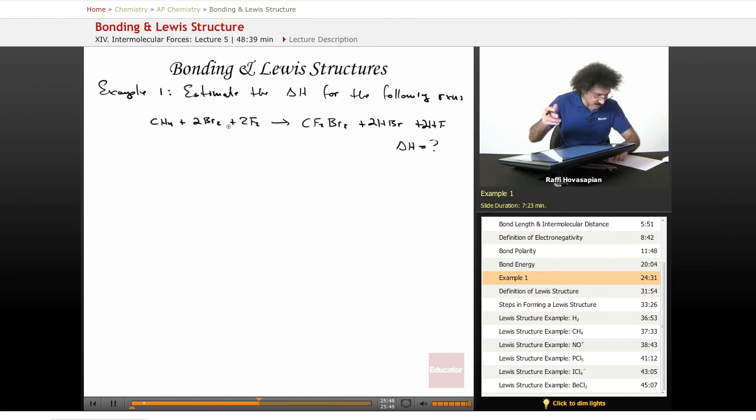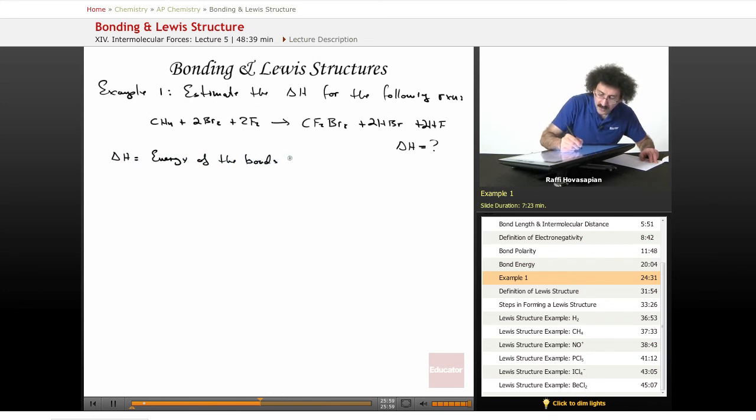So, as it turns out, the delta H is going to be this. The delta H is going to be the energy of the bonds broken. So, think about this for a second. It's the energy of the bonds broken minus the energy of the bonds formed.